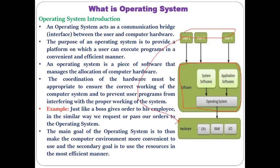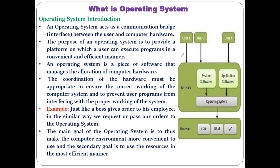The user cannot directly interact with the hardware. The user cannot give instructions directly to the CPU to execute something, cannot directly instruct the RAM to store something, and cannot make a direct request to input-output devices to perform I/O operations. So the user has to do all these activities with the help of a middle software — that middle software is nothing but the operating system. Even if the user wants to execute an application program like VLC, you need an intermediate software between the user and the hardware, which is the operating system. An operating system acts as a communication bridge between the user and the computer hardware.